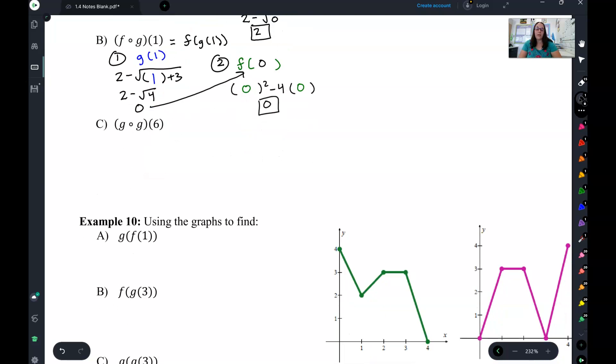With that, I would like you to pause the video and try doing c on your own. Do the two steps, g of g of 6. So find the inner one first, g of 6, and then plug that in to the outer one. Ready, go.